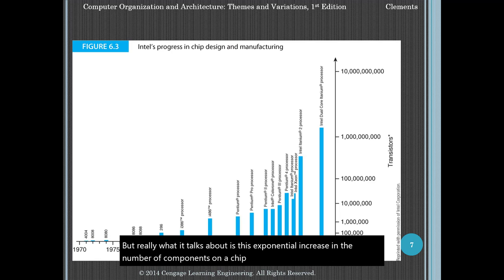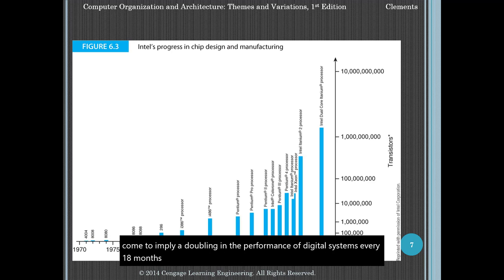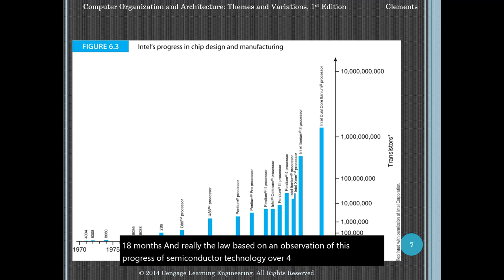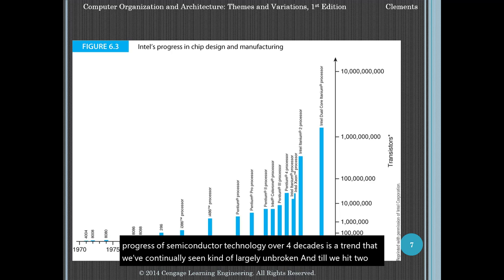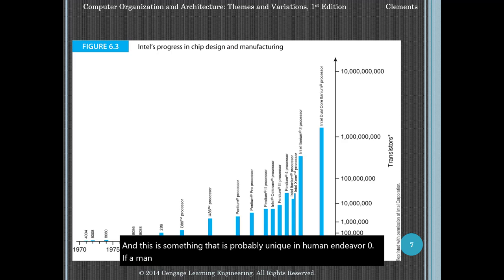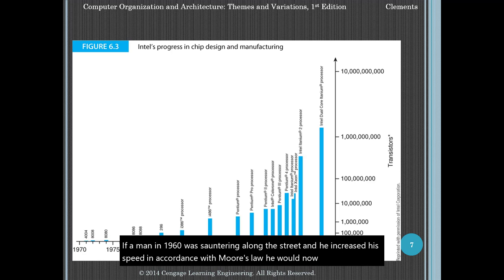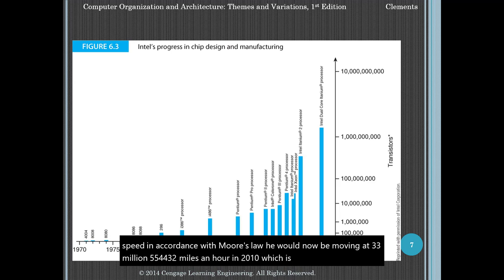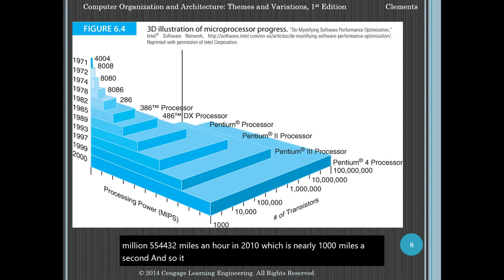What Moore's Law talks about is this exponential increase in the number of components on a chip. Over time, Moore's Law has come to imply a doubling in the performance of digital systems every 18 months. The law, based on observation of semiconductor technology progress over four decades, is a trend that continued largely unbroken until around 2010 — something probably unique in human endeavor. So if a man in 1960 was sauntering along the street and he increased his speed in accordance with Moore's Law, he would now be moving at 33,554,432 miles an hour in 2010, which is nearly a thousand miles a second.